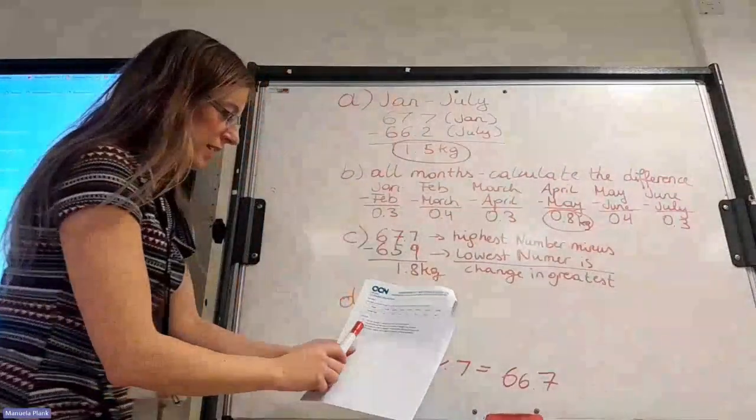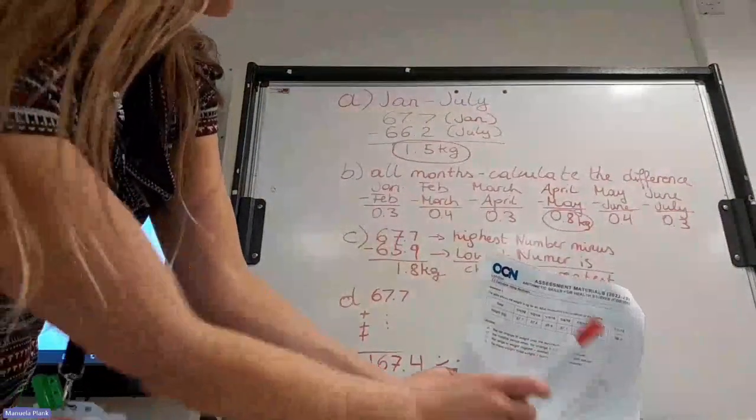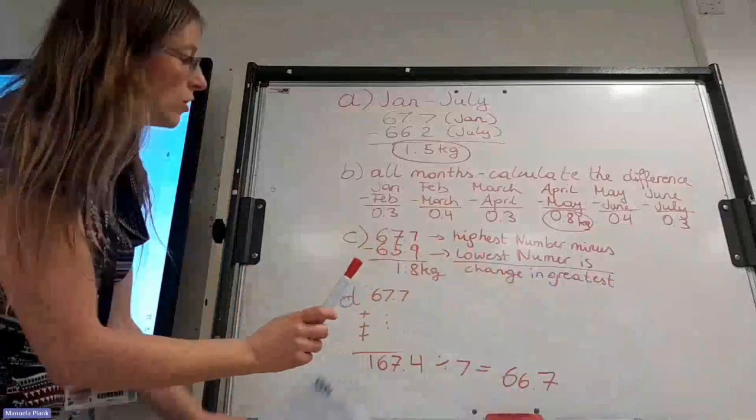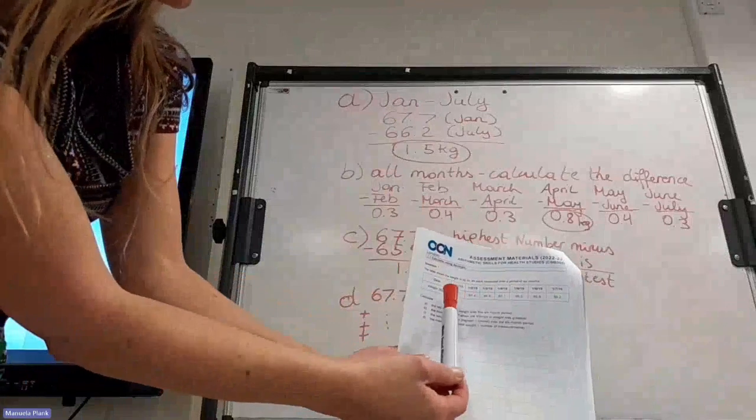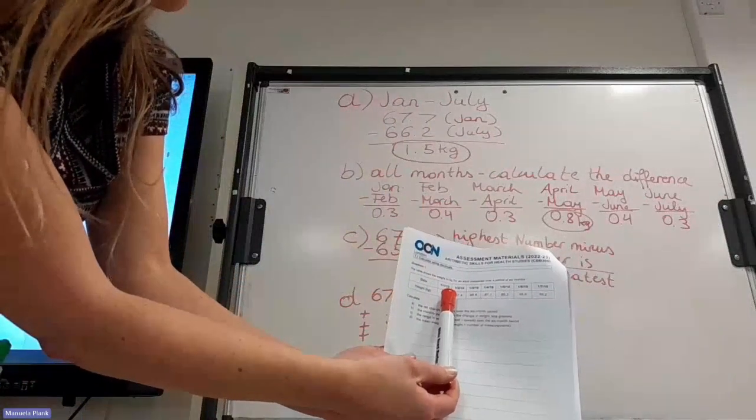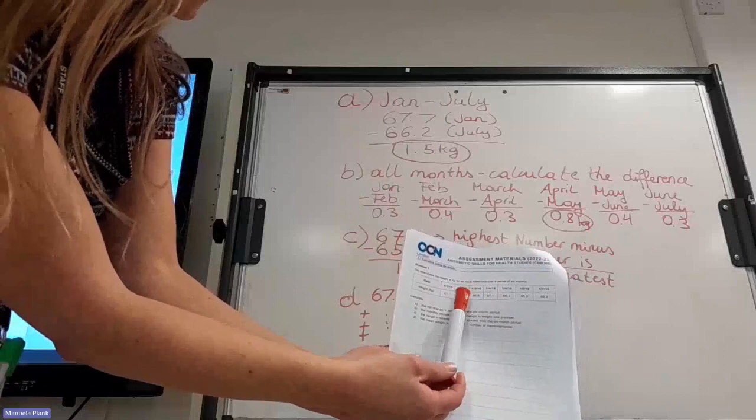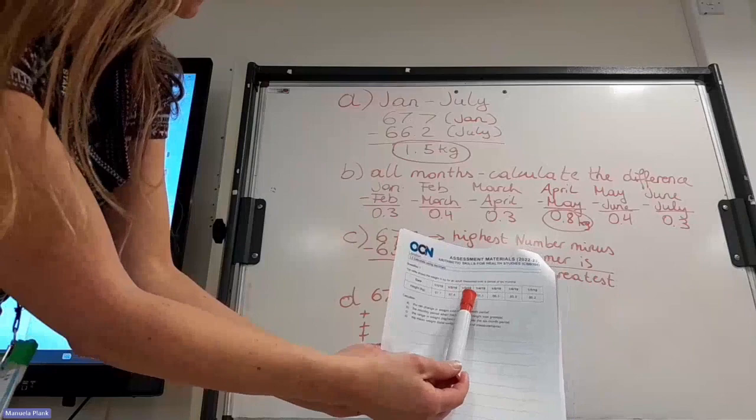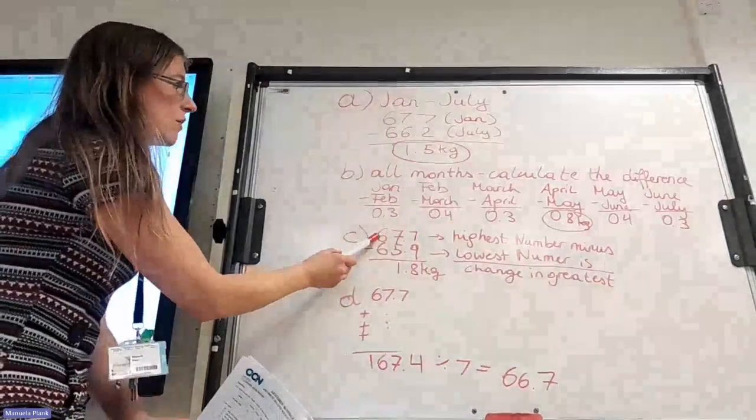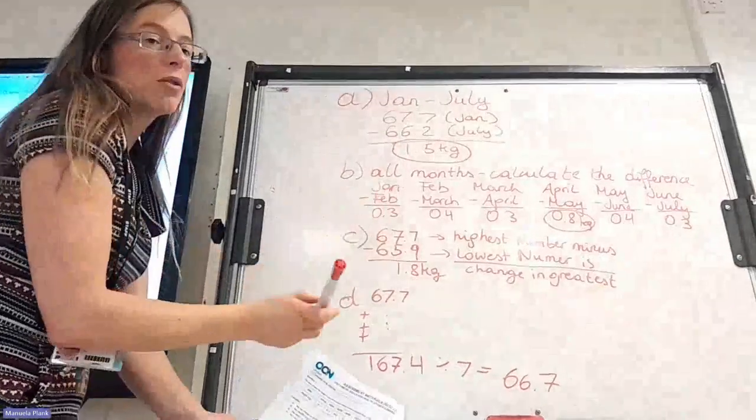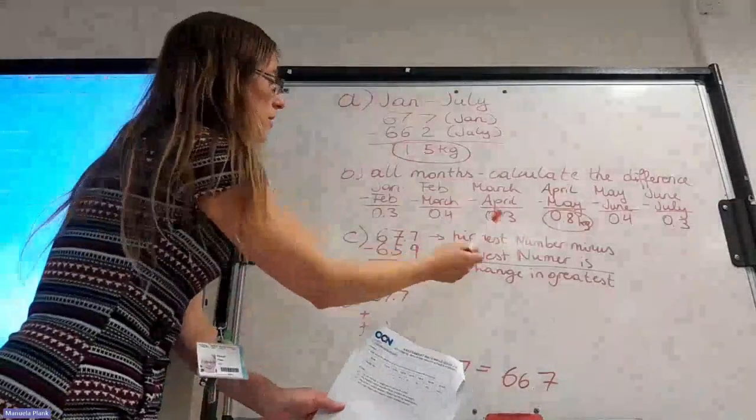See, it says the range in weight, highest minus lowest over the six months period. So we check out the highest number that we can find in the table. So 67.7 seems to be the highest number, because all the other numbers are smaller. Look, 67.4 or 66.8. So we've managed to find the highest number, which is in January, but it could be any other month. You have to check in your exam, which is the highest number.